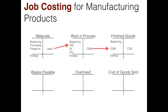Let's look at the overhead T-account. On the left-hand side we have actual overhead — the overhead that's actually incurred. On the right-hand side we have what's applied, also called allocated, which we'll discuss later. Actual overhead is made up of three components: indirect materials, indirect labor, and other overhead.